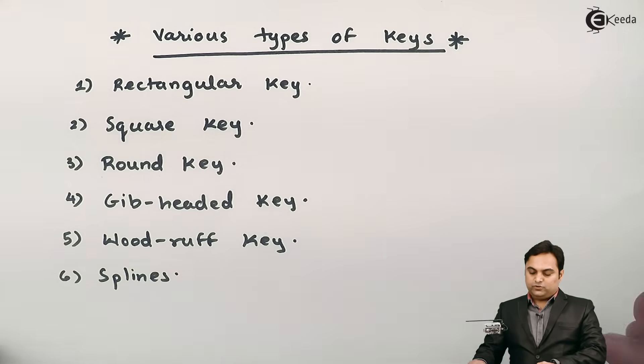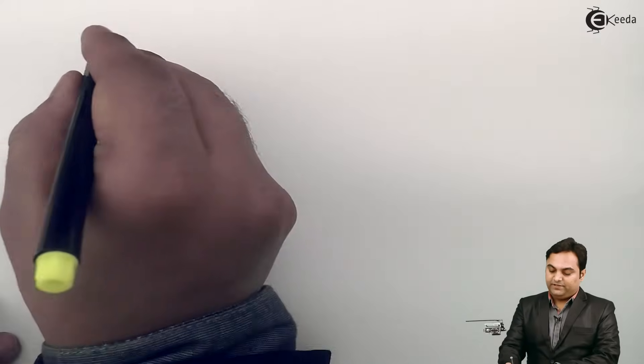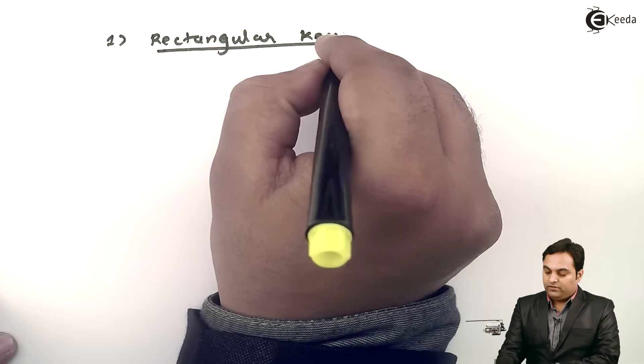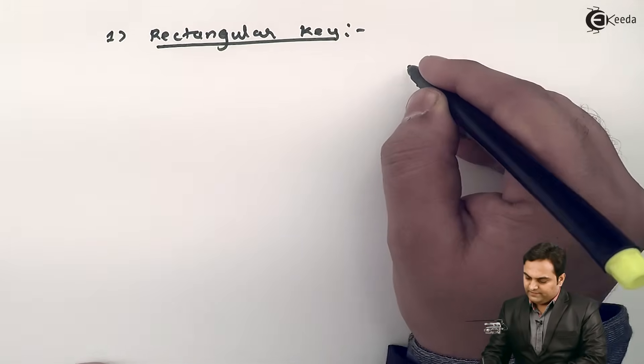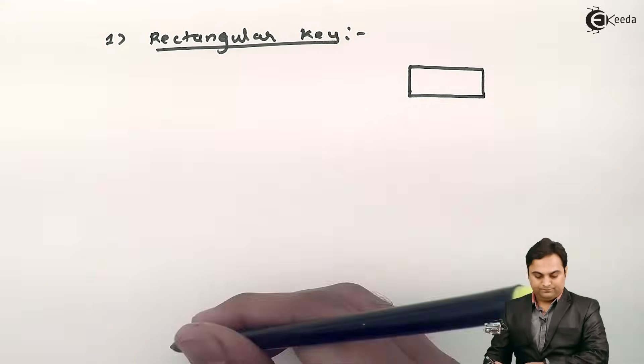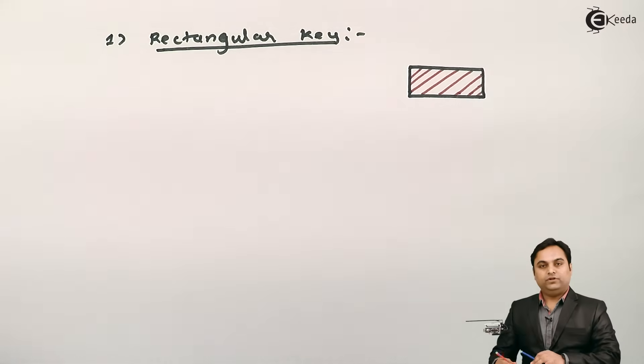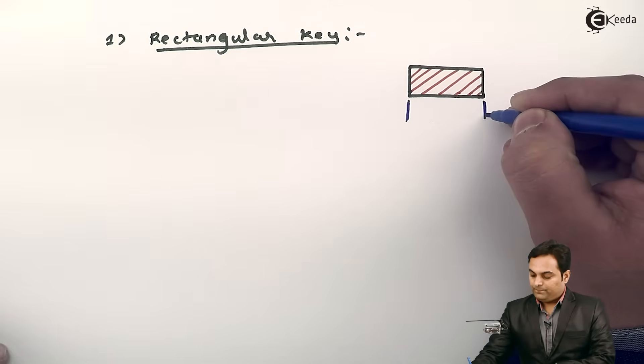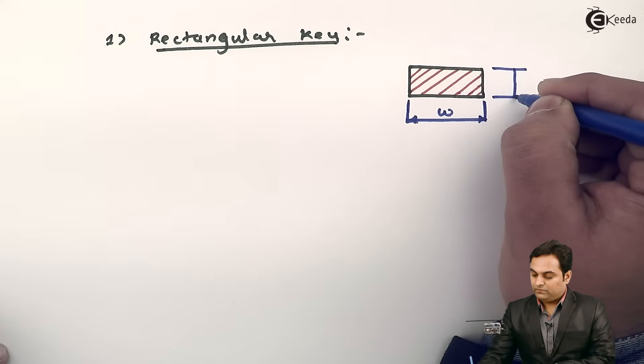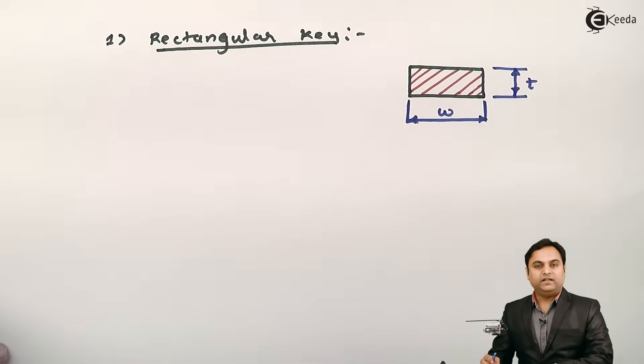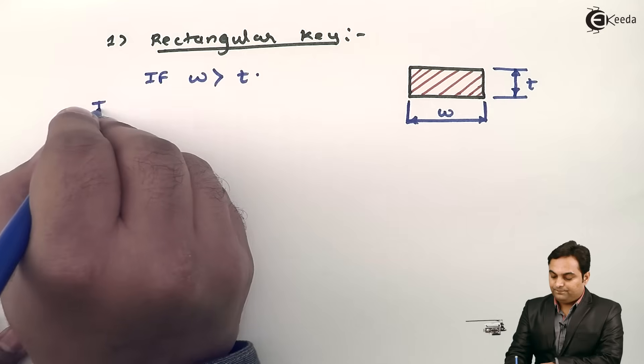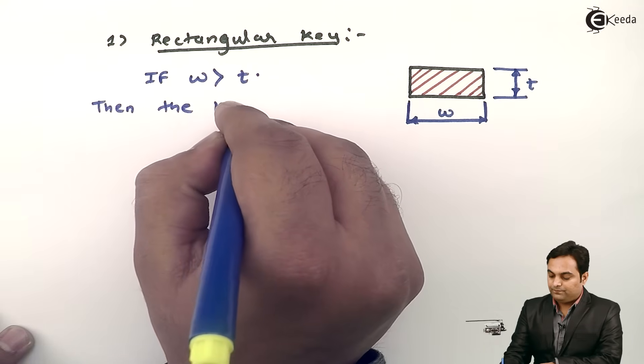So first one is a rectangular key. I'll explain what is meant by rectangular key. When we say that the key is a rectangle, it means that the cross-section of the key will be in the form of a rectangle. So here is the cross-section where this is the width of key and here we have thickness of key. If we can say that if width is greater than thickness, then the key is rectangular.